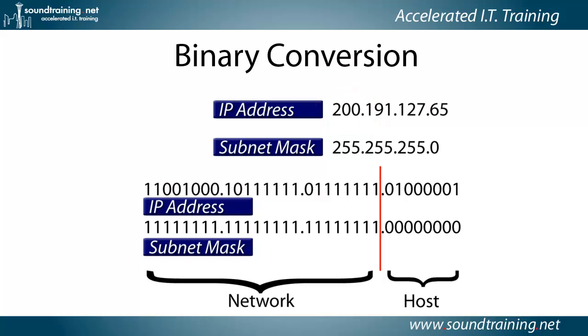How many bits make up the network portion of a class C address by default? Remember that table we had earlier? It's always 24 bits that make up the network portion of a class C address by default. How many bits are turned on in the subnet mask? 255 always equals 8 bits turned on.